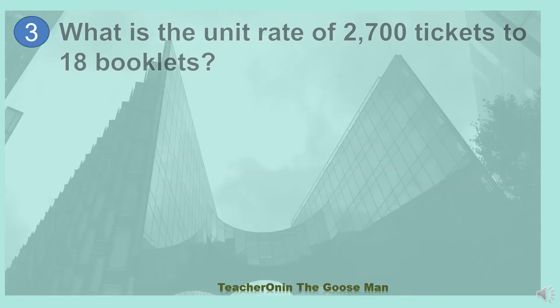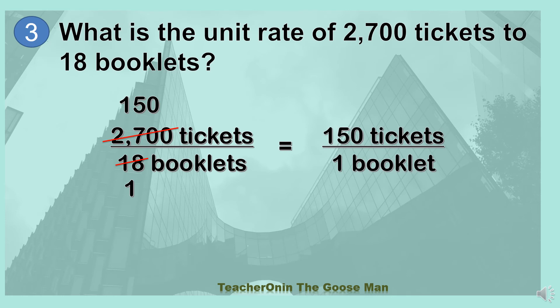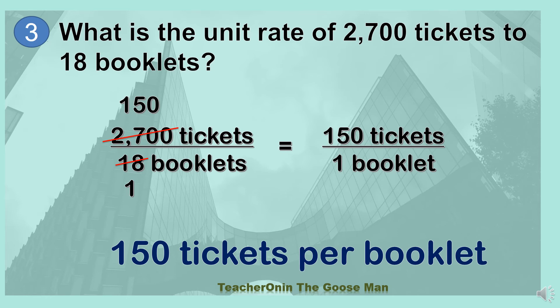Let's move on to the third example. What is the unit rate of 2,700 tickets to 18 booklets? I'll write the ratio of 2,700 tickets and 18 booklets, then divide both numerator and denominator by 18. So 18 divided by 18 gives me 1 and 2,700 divided by 18 gives me 150. So in fraction form, I have 150 tickets all over 1 booklet, or 150 tickets per booklet.